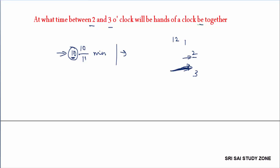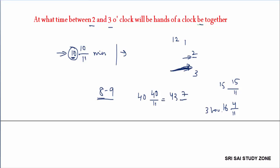Solving similarly for 3 and 4: 3 into 15 divided by 11 gives 16 and 4 by 11, so the answer is 3 hours 16 and 4/11 minutes. For 7 and 8: the calculation gives 8 hours 40 and 40 by 11 minutes.